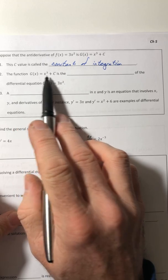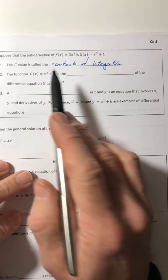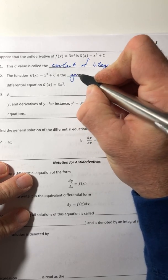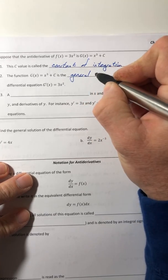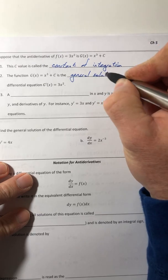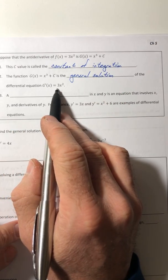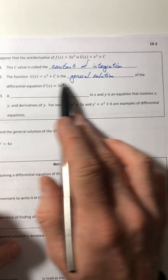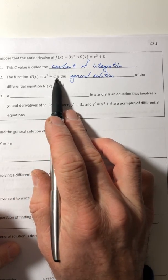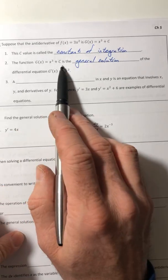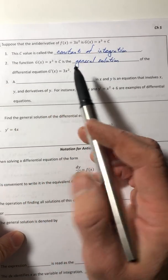Number two, that g of x, so this whole thing, this anti-derivative, is the general solution of that differential equation. And it's the general solution because of the plus c. You don't know exactly what the c is, so it's just in general terms. If you did know it, that would be the particular solution.